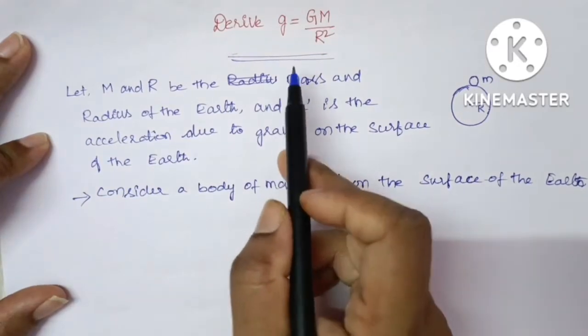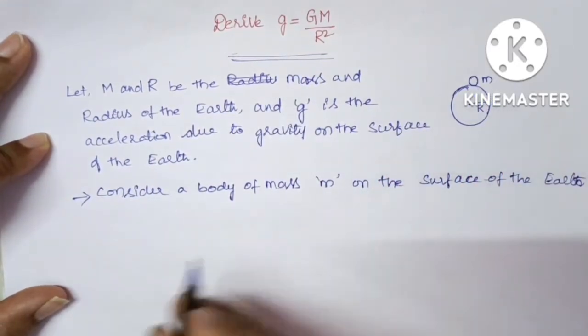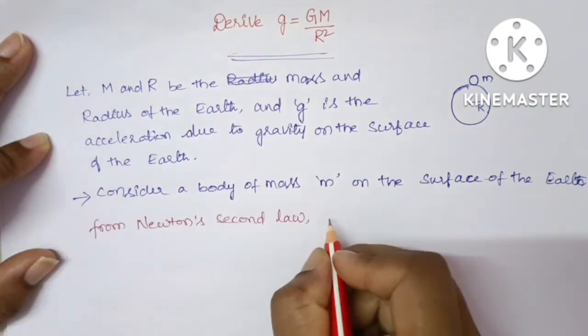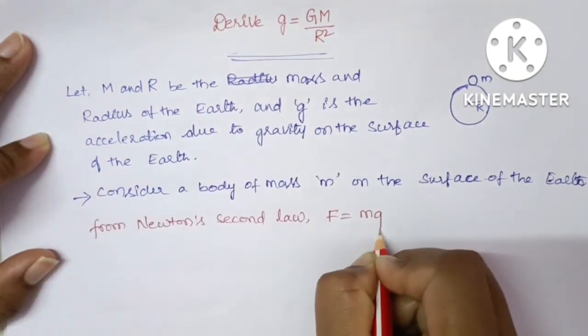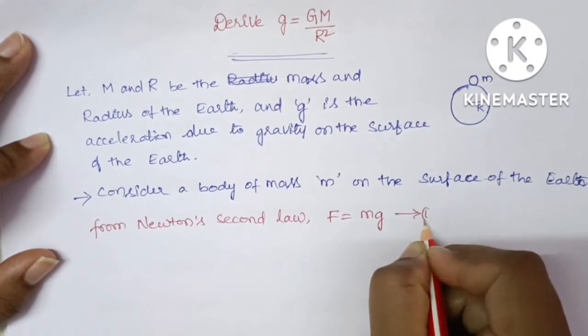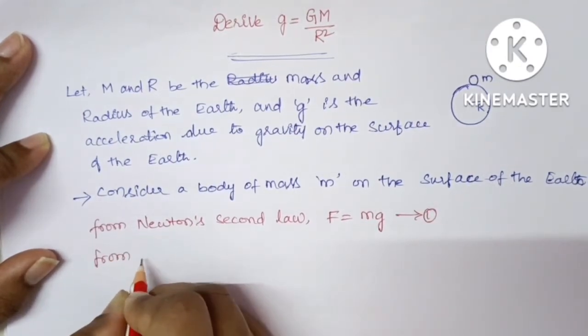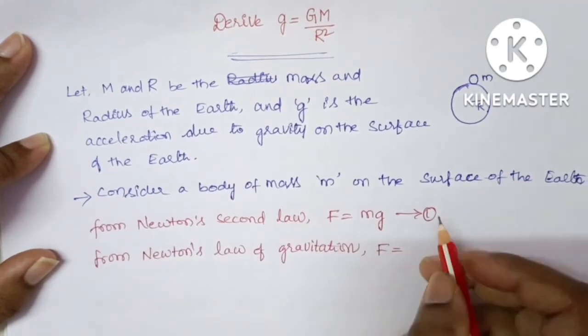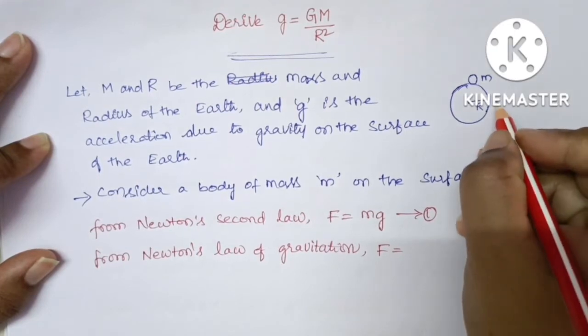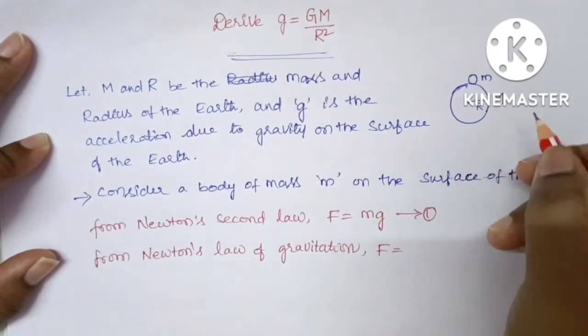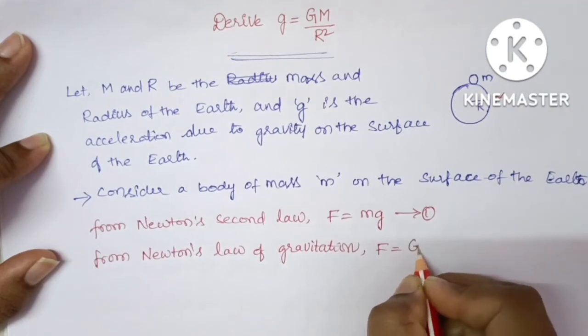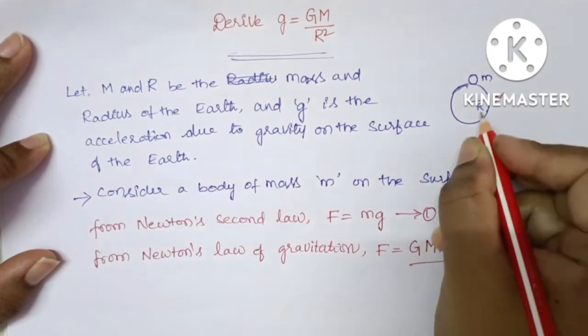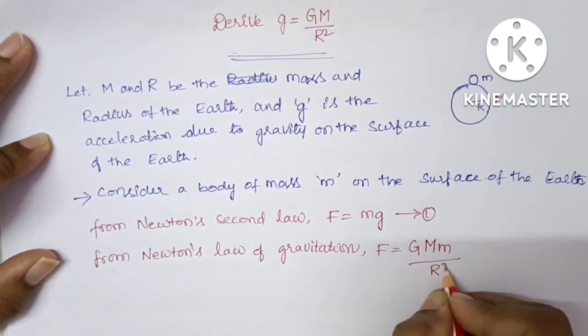So here we are finding acceleration due to gravity on the surface of the Earth. We know that from Newton's second law F equal to mg, let it be equation number 1. And also from Newton's law of gravitation, the gravitational force F equal to, here in this particular case we are considering mass of the Earth is capital M, so F equal to G into M and small m upon R square, radius of the Earth.